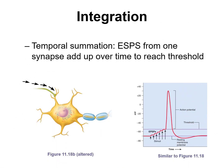One way those postsynaptic potentials can be summed is over time — temporally. This process is called temporal summation. With one presynaptic neuron, if action potentials are being generated in quick enough succession, it's going to release neurotransmitters in quick enough succession such that there are enough EPSPs generated over time to get the postsynaptic neuron from the resting membrane potential to threshold.